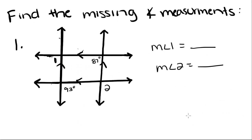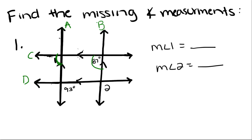Our directions are to find the missing angle measurements — angle 1 and angle 2. These lines are parallel, and these lines are parallel. We'll label them A, B, C, and D. Looking at lines A and B cut by transversal C, corresponding angles have to be congruent. So the angle on line A and line C is congruent to the angle on line B and line C.